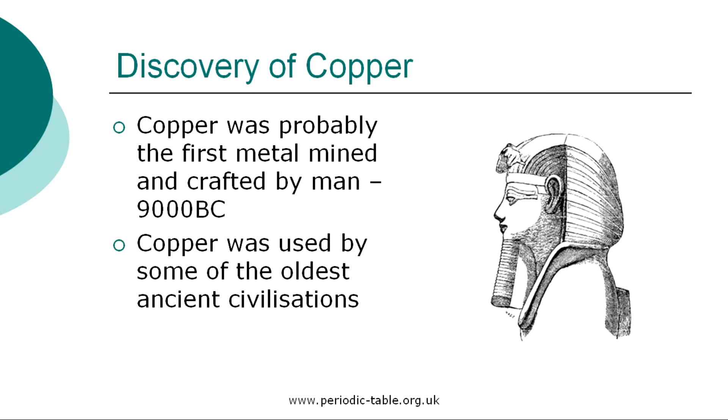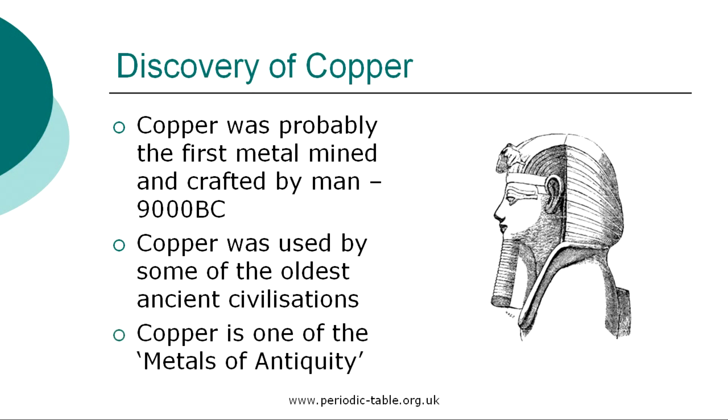These seven metals were iron, gold, silver, copper, lead, tin, and mercury, and are now referred to as the metals of antiquity.